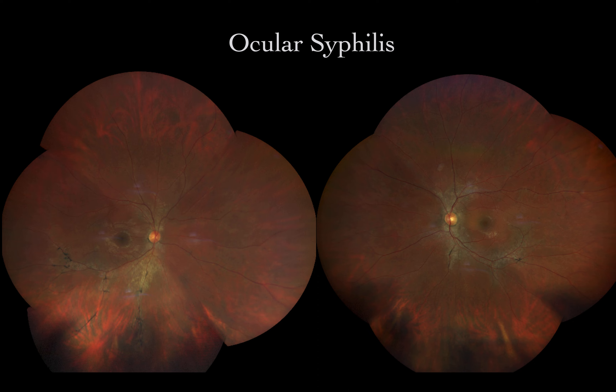Syphilis can present in three stages: primary, secondary, or tertiary, with a possible latency between each phase. Primary syphilis is very hard to find — the chancre in the eye may present as a mild conjunctivitis, which is often underdiagnosed.